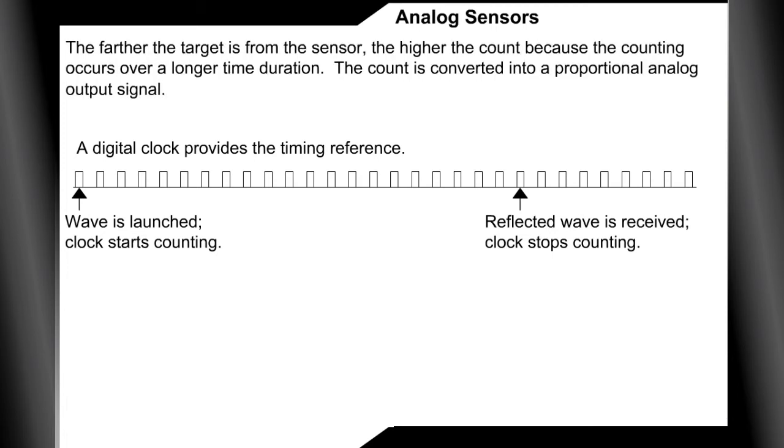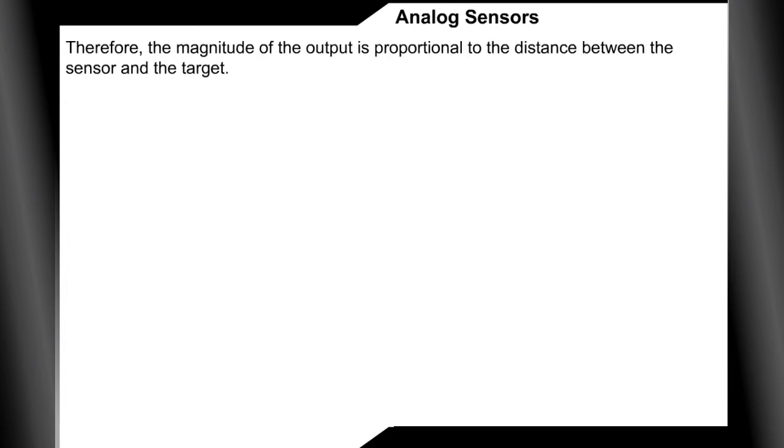The farther the target is from the sensor, the higher the count because the counting occurs over a longer time duration. The count is converted into a proportional analog output signal. Therefore, the magnitude of the output is proportional to the distance between the sensor and the target.